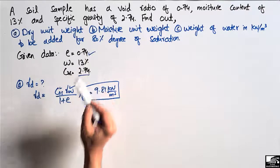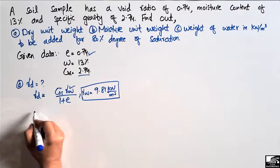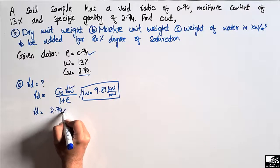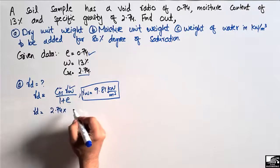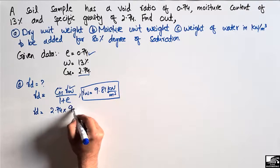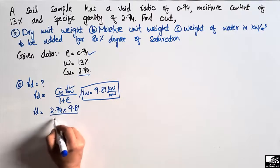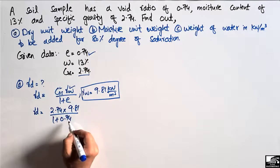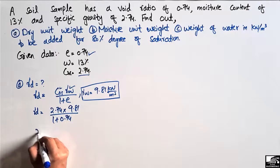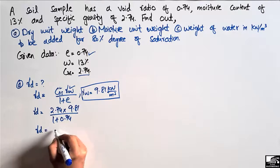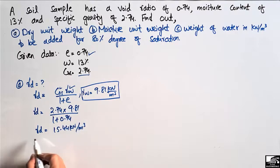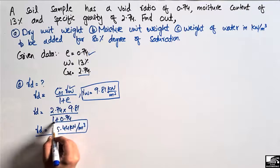Plugging in all values: γD = 2.74 × 9.81 / (1 + 0.74). By multiplying and dividing, γD comes out to be 15.44 kN per cubic meter. This is the dry unit weight for this soil sample.